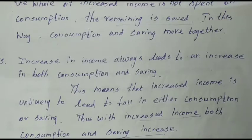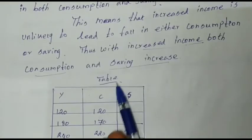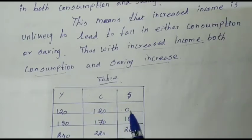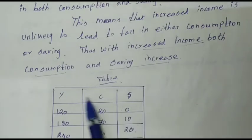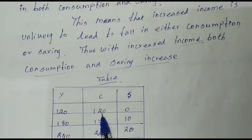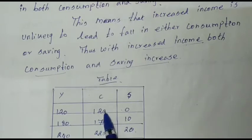Let's look at the table. First, the cost of consumption is 120. The savings is not available at that level. When income increases to 180, consumption is 170, and savings will be 10.